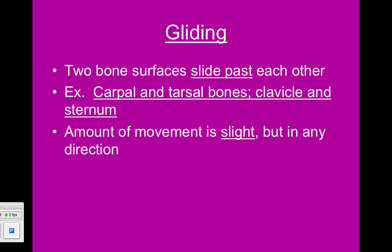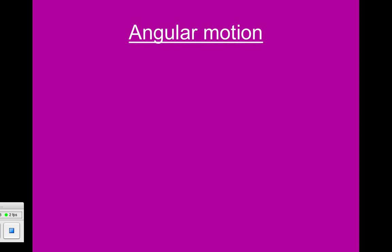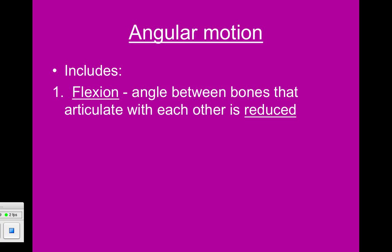Gliding is something that's hard to see, but we're going to spend most of our time talking about angular motion. Angular motion includes six different types of movement. That includes flexion, which is when the angle between the bones is reduced, like when you flex your arm at your elbow — the angle between your radius, ulna, and humerus goes down. For many of these movements, if we move one way, we have the opposite as well, because we need to be able to undo any actions we perform.